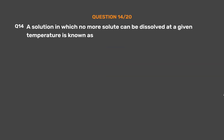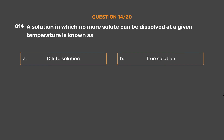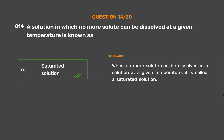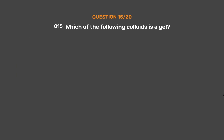Question number 14. A solution in which no more solute can be dissolved at a given temperature is known as: Option A: Dilute solution. Option B: True solution. Option C: Saturated solution. Option D: Unsaturated solution. The correct answer is Option C: Saturated solution. When no more solute can be dissolved in a solution at a given temperature, it is called a saturated solution.